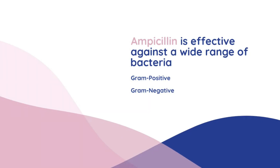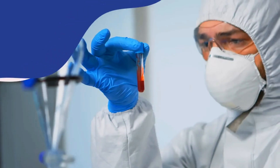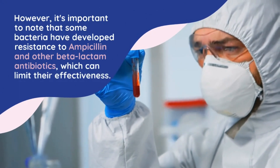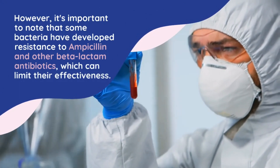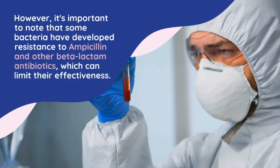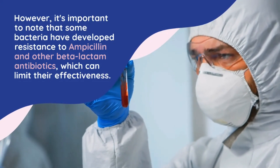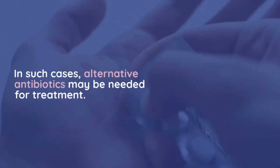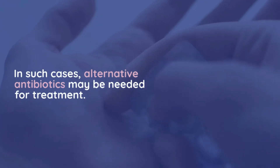Ampicillin is effective against a wide range of gram-positive and gram-negative bacteria, including Streptococcus pneumoniae, Haemophilus influenzae, Escherichia coli, and Salmonella. However, it's important to note that some bacteria have developed resistance to ampicillin and other beta-lactam antibiotics, which can limit their effectiveness.